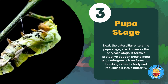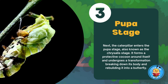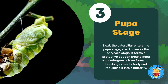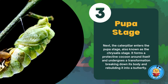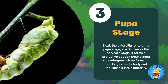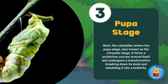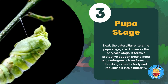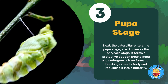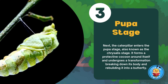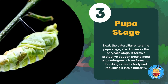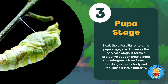Pupa Stage. Next, the caterpillar enters the pupa stage, also known as the chrysalis stage. It forms a protective cocoon around itself and undergoes a transformation, breaking down its body and rebuilding it into a butterfly.